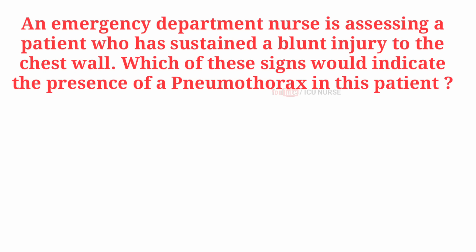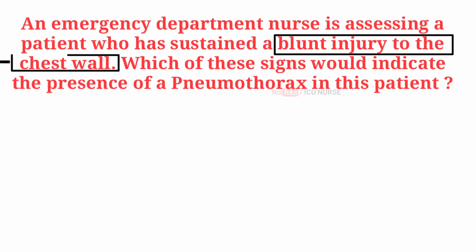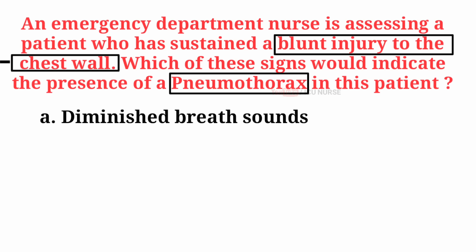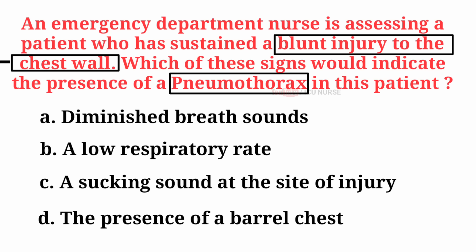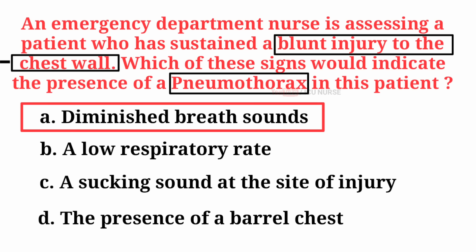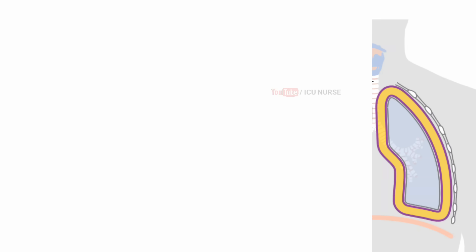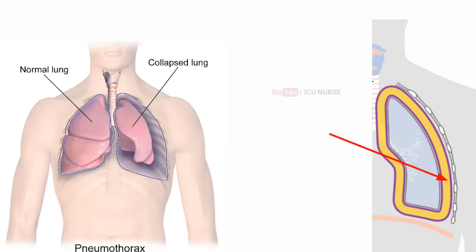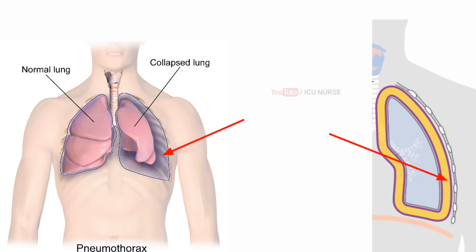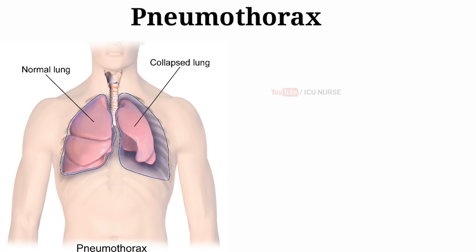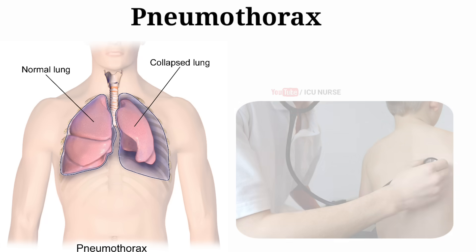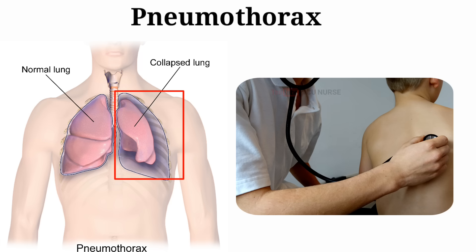An emergency department nurse is assessing a patient who has sustained a blunt injury to the chest wall. Which of these signs would indicate the presence of a pneumothorax? A. Diminished breath sounds. B. A low respiratory rate. C. A sucking sound at the site of injury. D. The presence of a barrel chest. And the correct answer is A — diminished breath sounds. The pleural space is present between the lungs and chest wall. Air or gas in this cavity causing collapse of the lung is called pneumothorax. Chest expansion is significantly decreased on the side of the pneumothorax, and breath sounds are dramatically decreased due to decreased ventilation on that side.